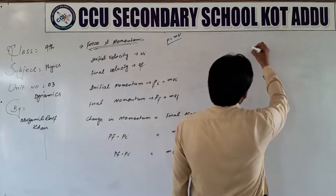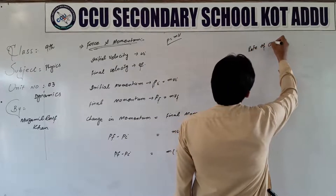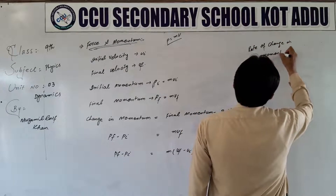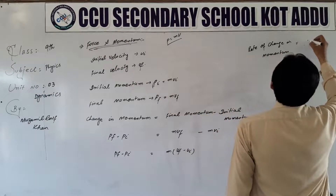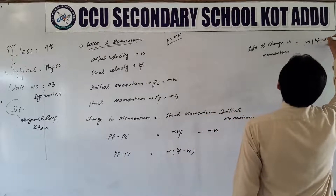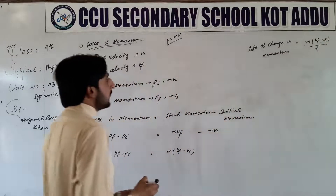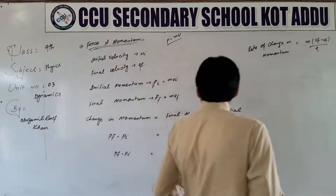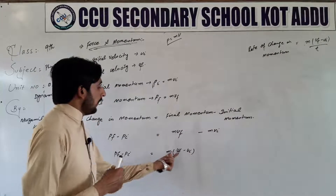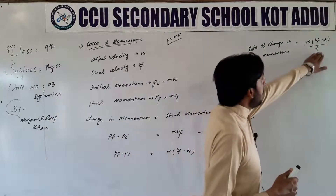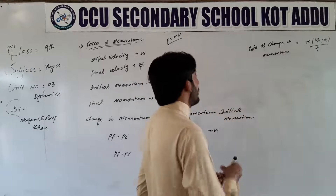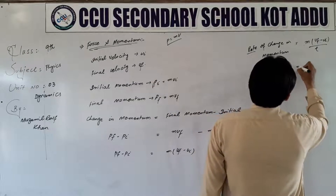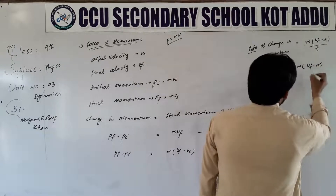Iska ham rate of change of momentum dekhate hain — just as rate of change of velocity hoti hai. Rate of change of momentum that will be equal to m into (vf minus vi) over t. Yani pf minus pi over t is equal to m into (vf minus vi) over t. Kyunki hamare paas m into (vf minus vi) maujud hai aur t ke liye uski shara hai — dono side par usse divide kar dete hain.